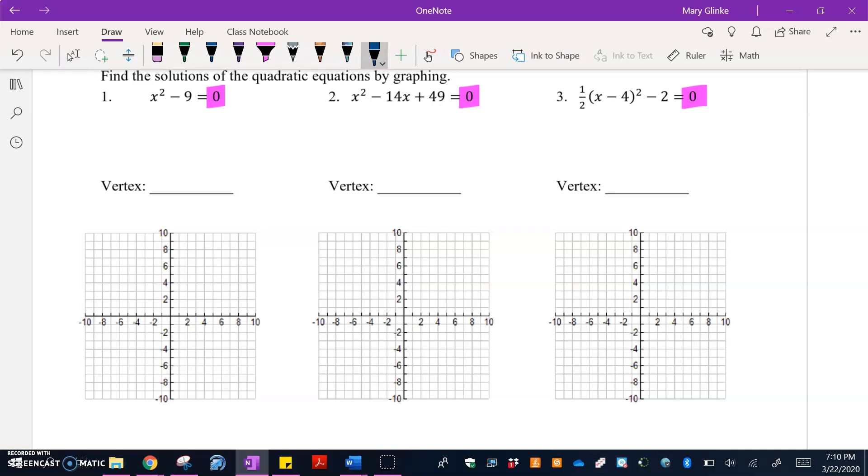So for the first one, zero equals x² - 9. Notice this is actually in vertex form, but it's also in standard form. So I'm going to use it as vertex form. My vertex here is going to be (0, -9) because my h value is zero. My k value is negative nine.